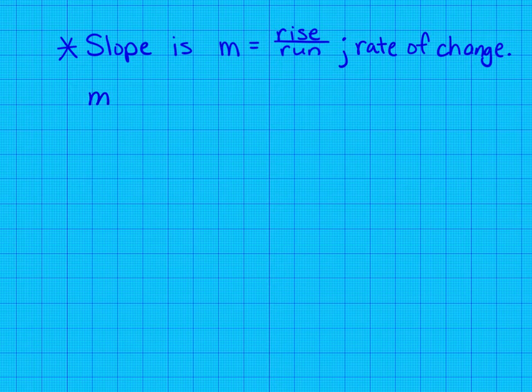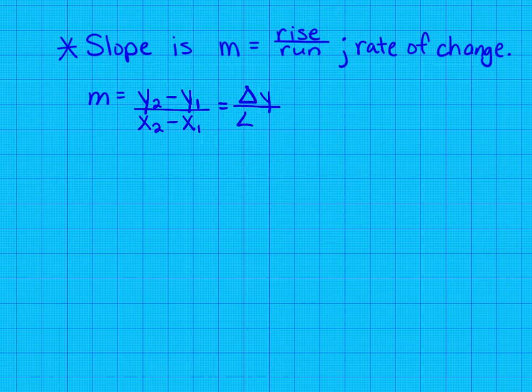You've seen this briefly in seventh grade, but we can find slope between two points by using a formula. Slope M is equal to y sub 2 minus y sub 1, that's the change in your y values, divided by x sub 2 minus x sub 1, that's the change in your x values. Sometimes you see this written as delta y, which is the change of your y's, over delta x, which is the change of your x's.